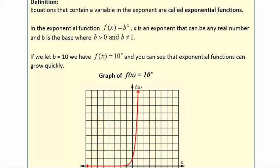Equations that contain a variable in the exponent are called exponential functions. Here is an exponential function: f(x) = b^x, where x is the variable exponent and can be any real number, b is the base, b must be greater than 0, and b cannot equal 1.